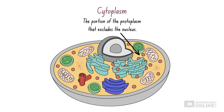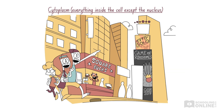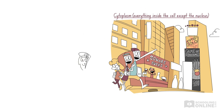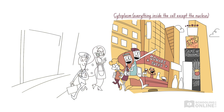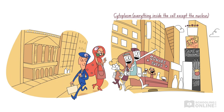Like the protoplasm, the cytoplasm mostly contains cytosol. Picture the entire city of Zoo York, then remove the city council centre — this area is like the cytoplasm. It's everything that happens inside the cell, excluding the nucleus.